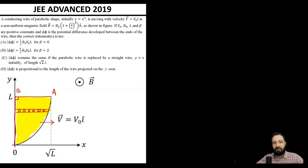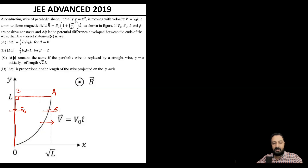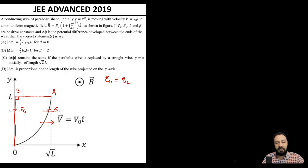Since total flux through the loop is not changing, there is no net EMF induced in the loop. This doesn't mean no EMF is induced in individual parts — it means their sum is zero. The EMF induced in segment OA is E1, in OB is E2, and there is no EMF in segment AB since the loop moves parallel to it. By KVL, E1 = E2.